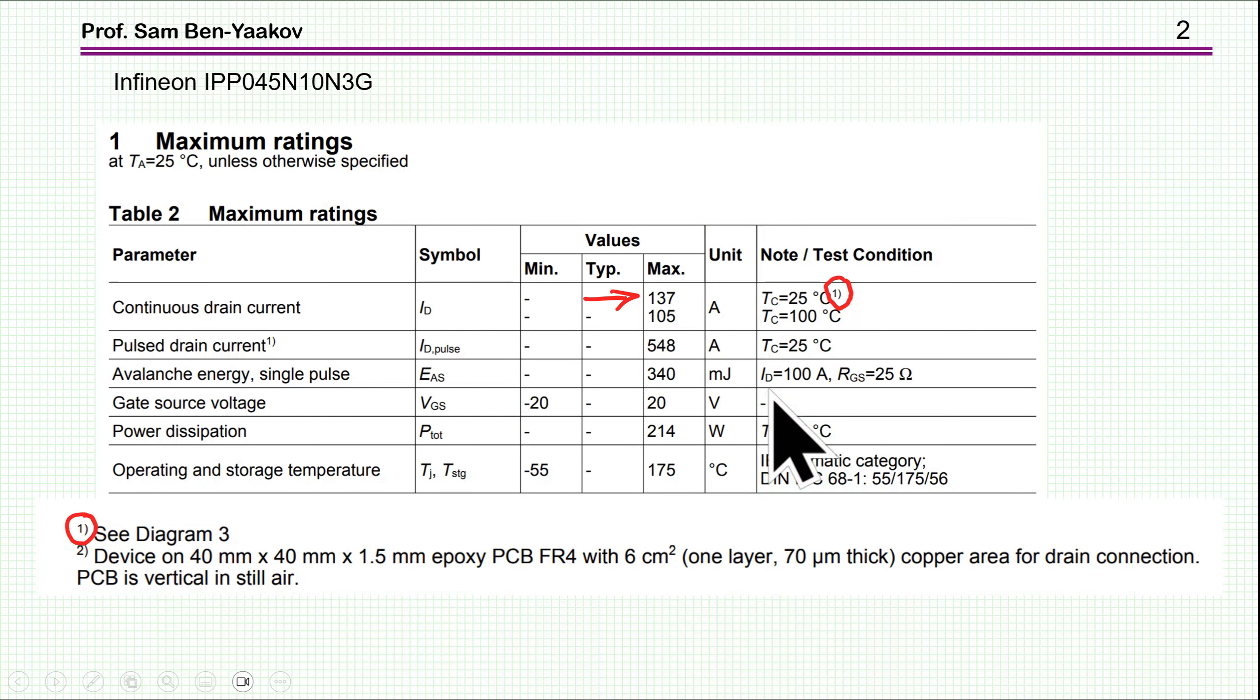This is a typical table of maximum rating or absolute maximum rating for an Infineon Power MOSFET, 100 volts. Here we have a number of parameters and the limits that you should not exceed. Now it's very important to realize that these are limits, not operating points.